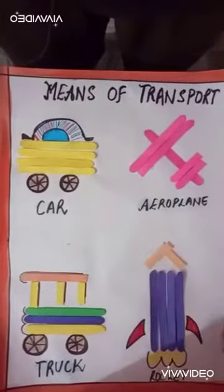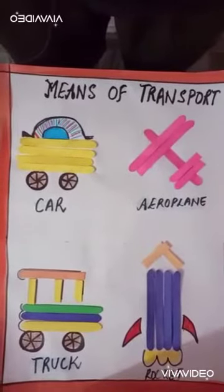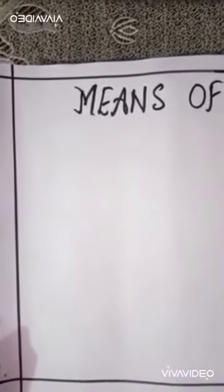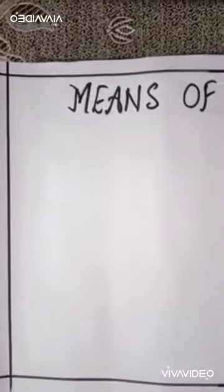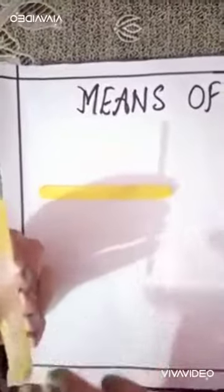This is car, an aeroplane, truck and a rocket. Now let's start. We will make a car with the help of ice cream sticks. First of all, take a stick and with the help of favicol, paste it on the sheet. Take another one. You have to paste four ice cream sticks on the sheet, like this.